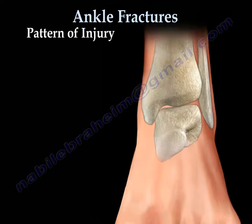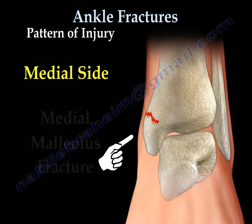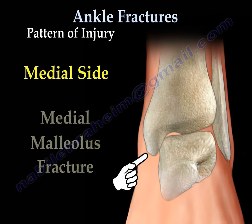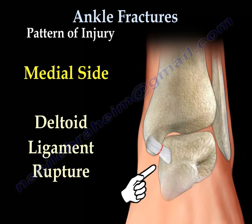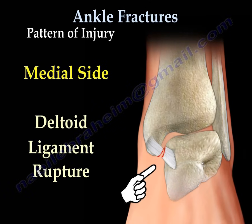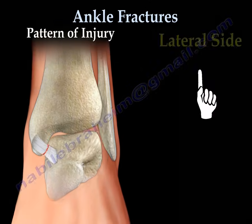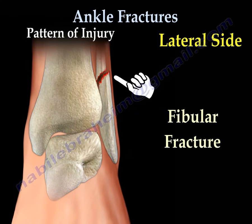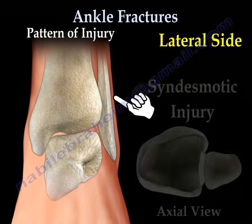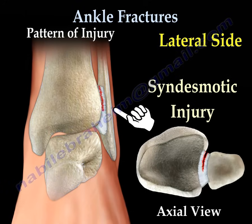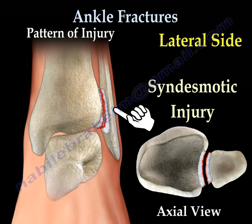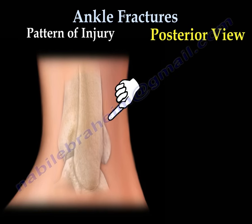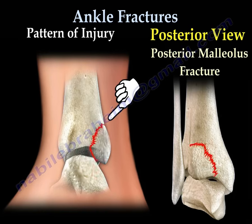Pattern of injury. On the medial side, you can get a fracture of the medial malleolus or deltoid ligament rupture. On the lateral side, you get the fibular fracture. You can also get a syndesmotic injury. Occasionally, there is a posterior malleolar fracture.